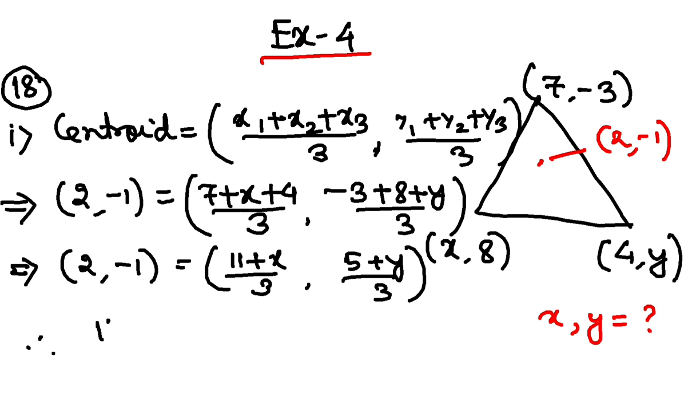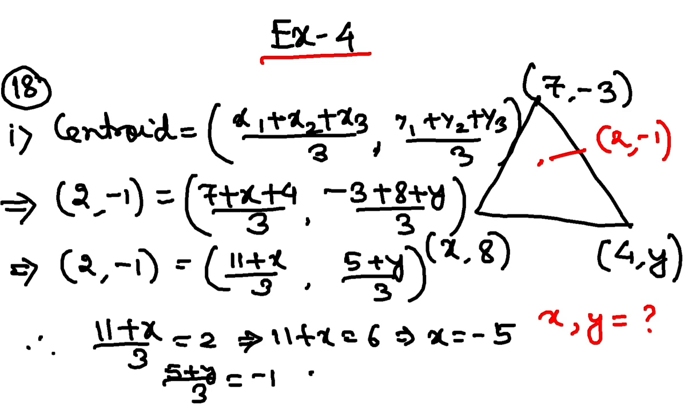I will make the x coordinates equal. So, 11 plus x by 3 equal to 2. This should give us 11 plus x equal to 6 or x equal to minus 5. Similarly, we have 5 plus y by 3 equal to minus 1. From here, you can calculate and you will get y equal to minus 8. So, my x equal to minus 5 and y is equal to minus 8 are the required values.